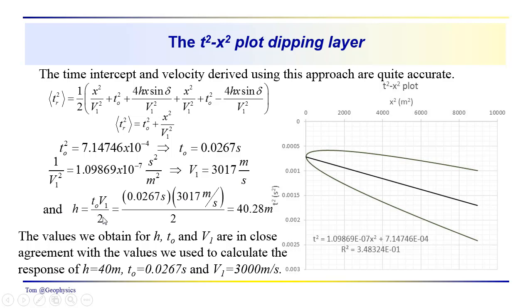Our velocity, using this relationship here, we get 3,017 meters per second. We could solve for H. Remember that T zero was equal to 2H over V1. We just inverted that to get H.